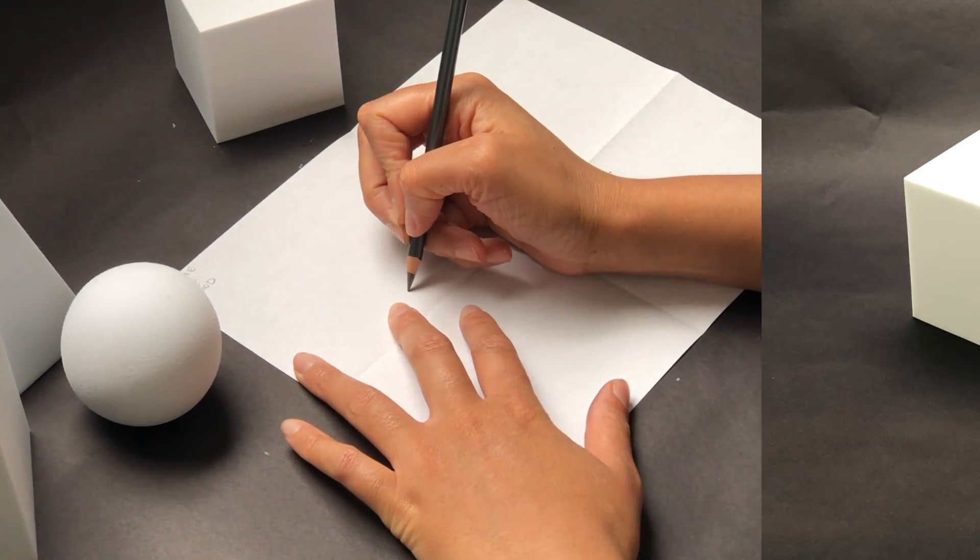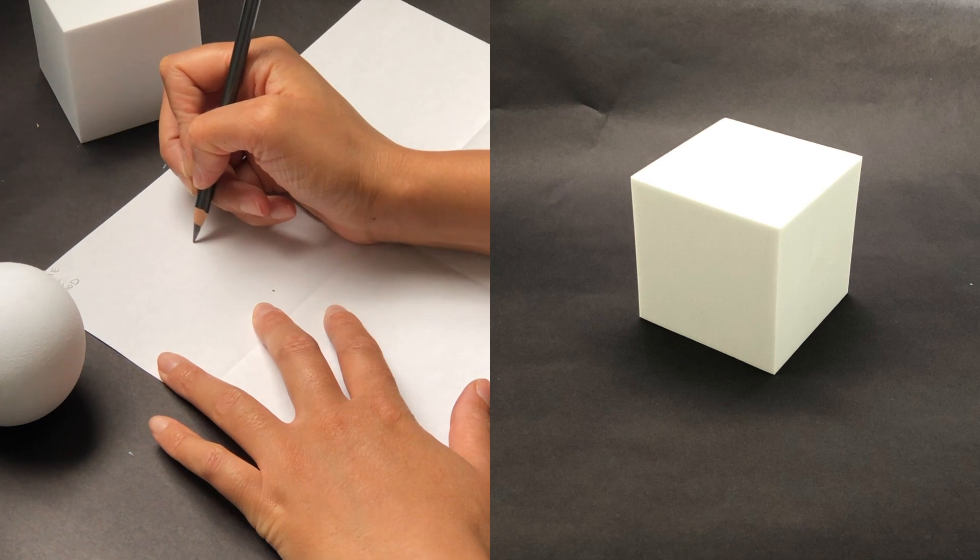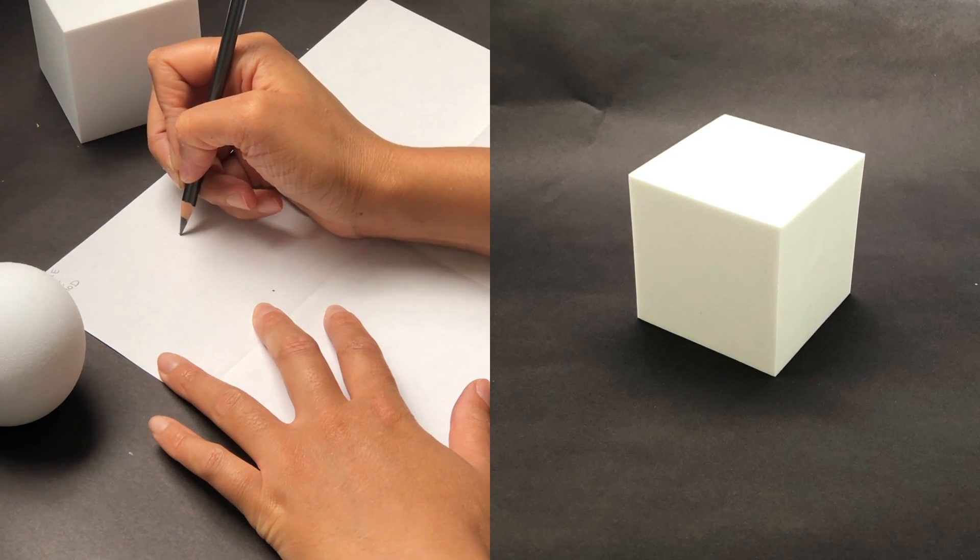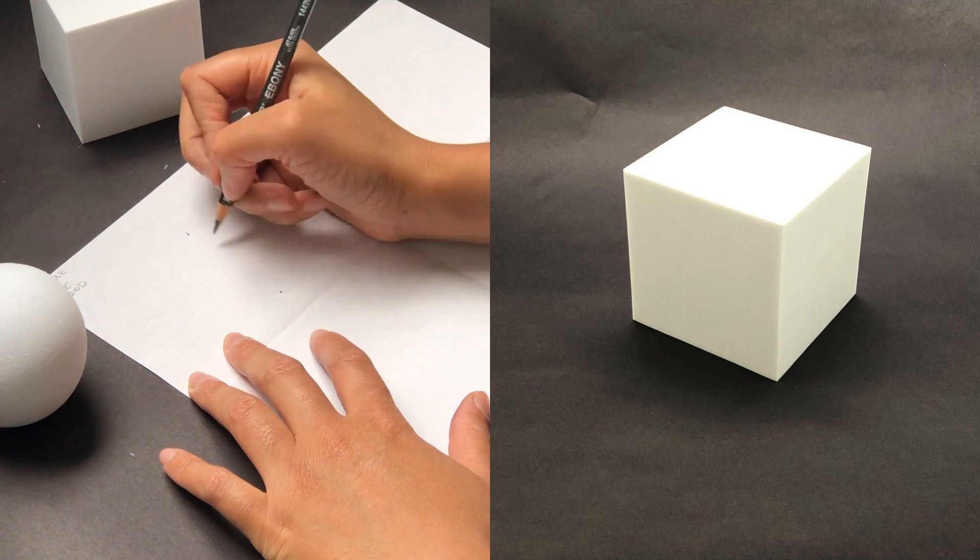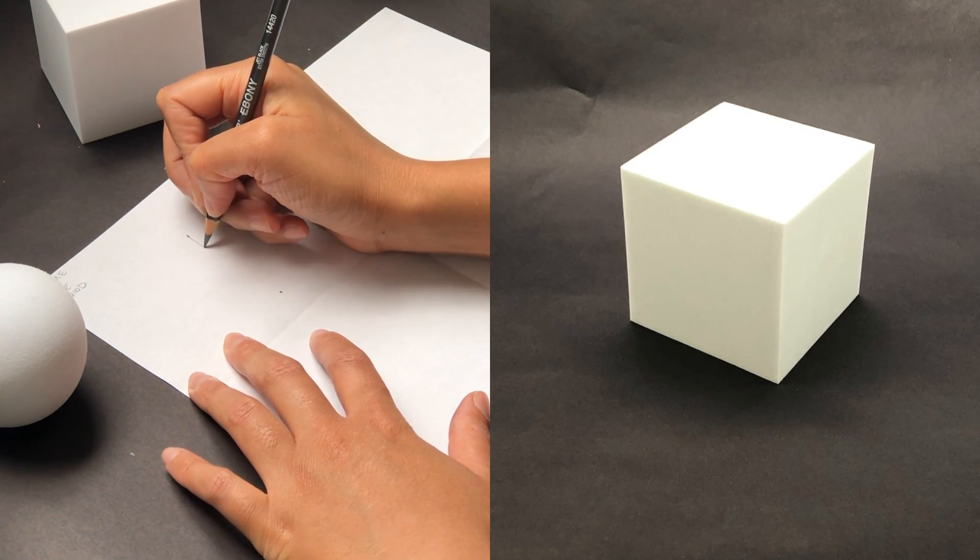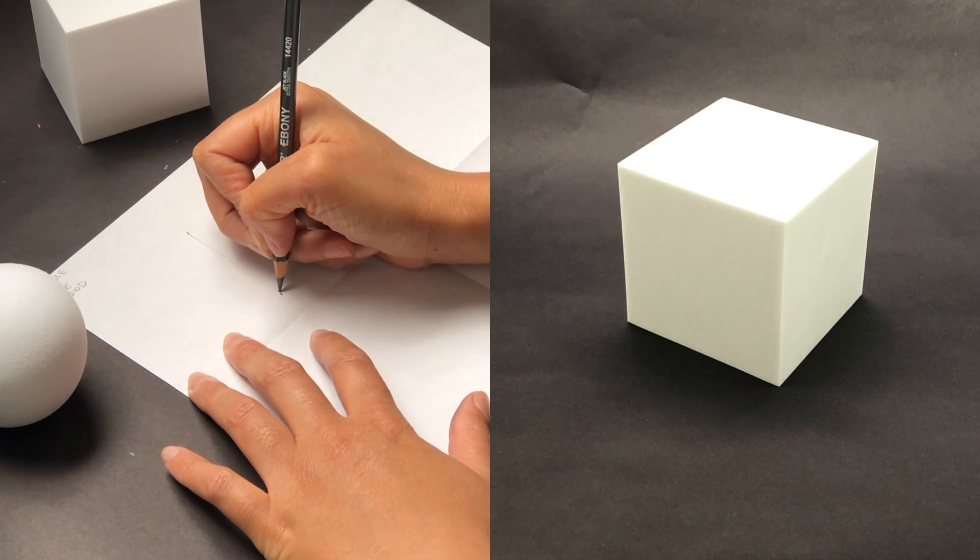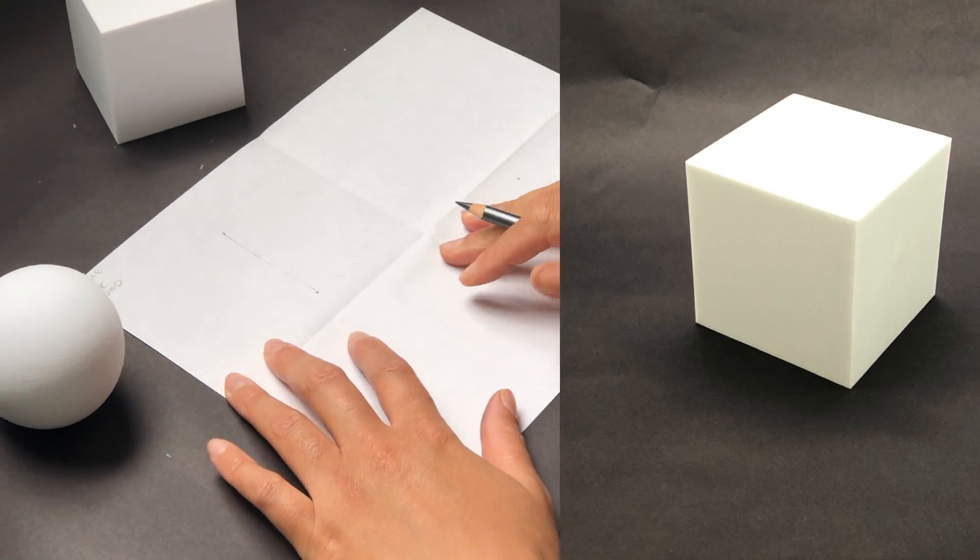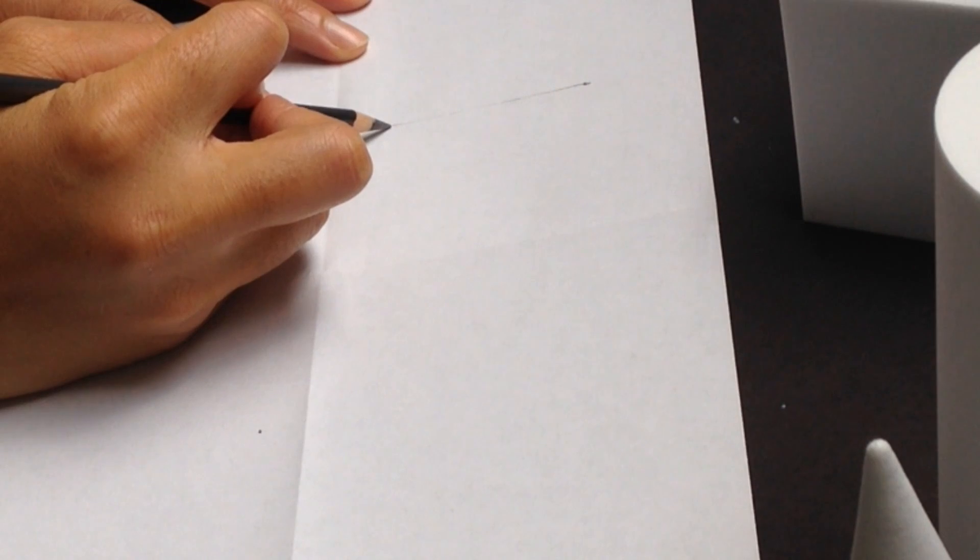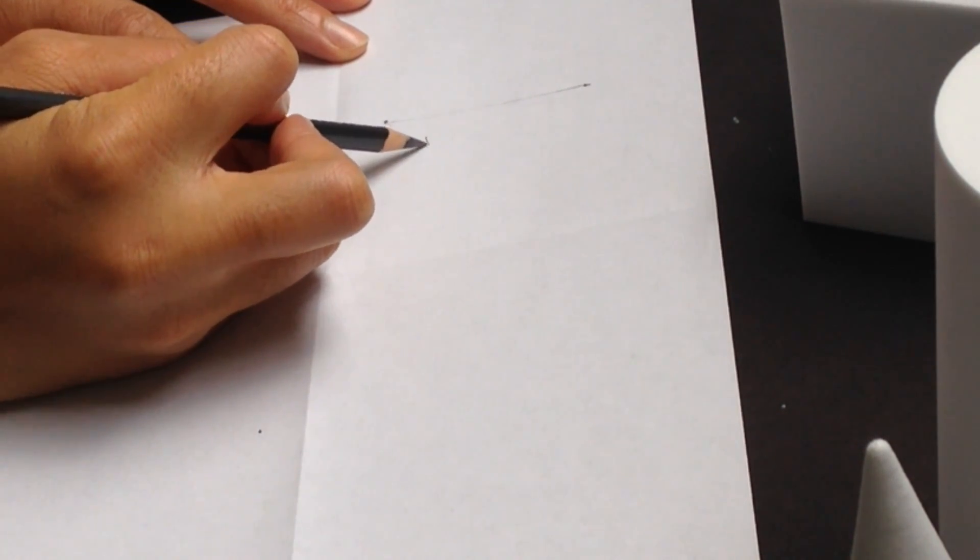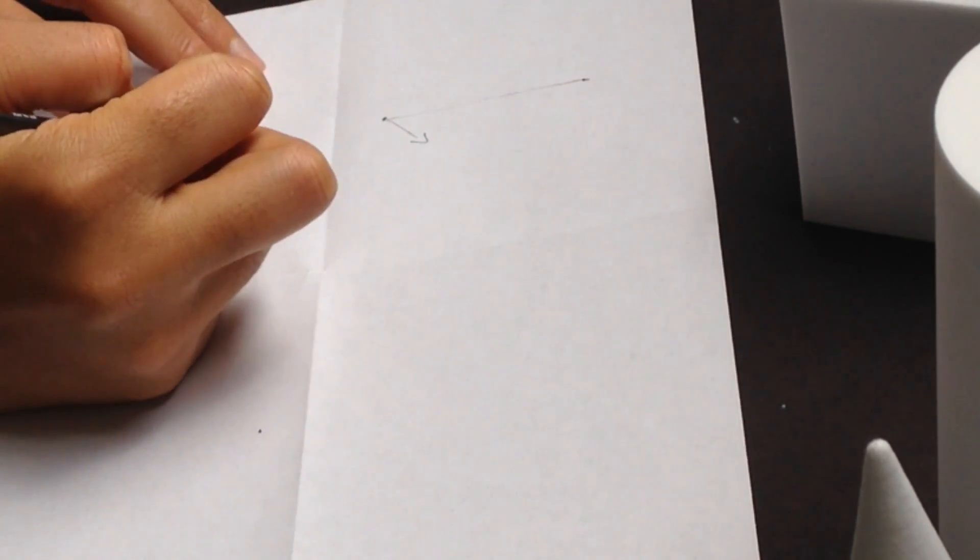I'll start by marking out two points which will be the front edge of the cube. I'll then ghost the line between so that I can get a straight line connecting the two points. Notice the angle that the cube is facing toward the right. I'll draw a short arrow so I know which direction the angle is going in.